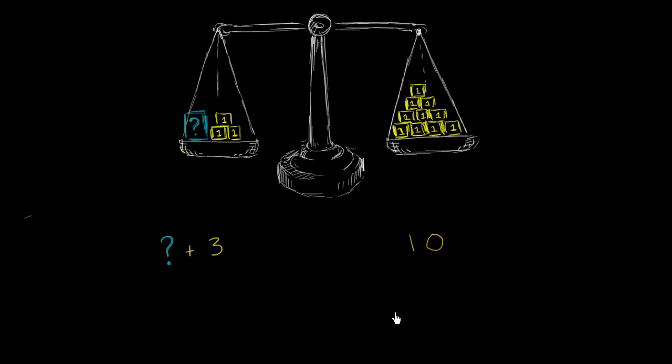And what else do we know? We know that the scale is balanced, that the mass here is equal to the mass here. Because the scale is balanced the way it's been drawn, we know that these two things are equal. So we have just set up an equation. We're using question mark as our unknown. We don't know what this mystery mass is. If we add 3 kilograms to it, we see that it has the exact same mass as 10 kilograms.